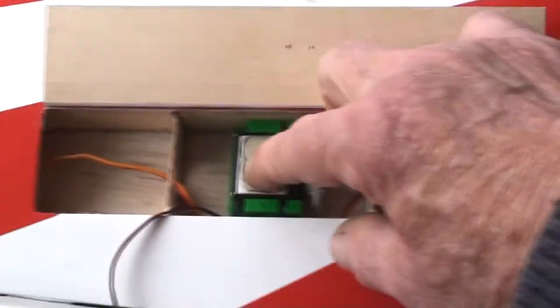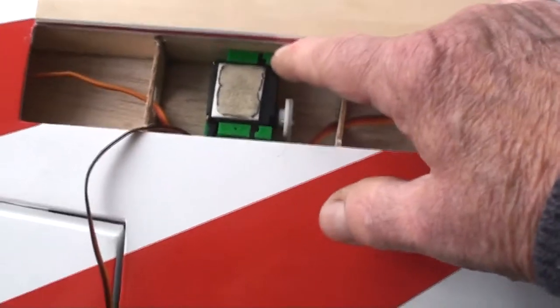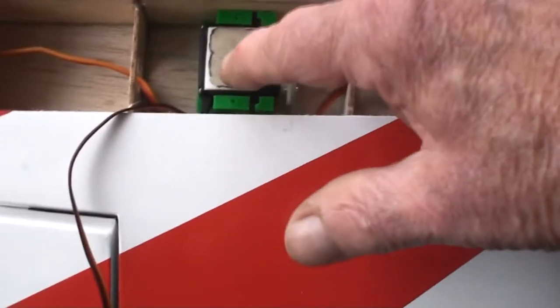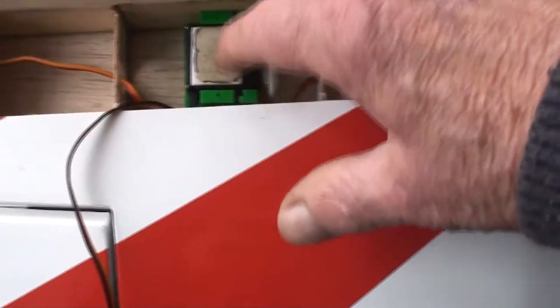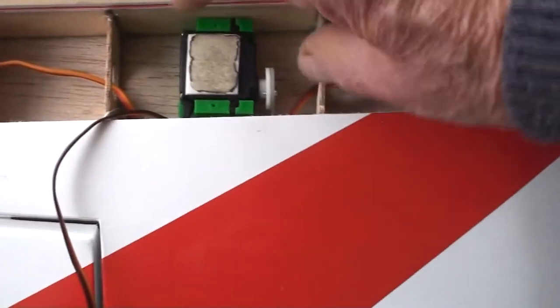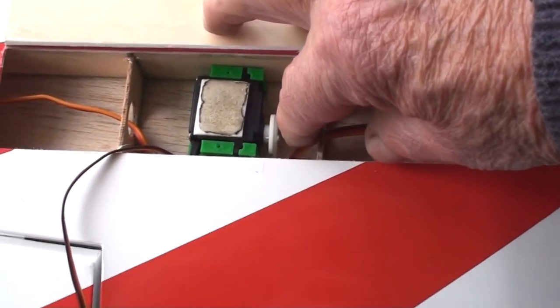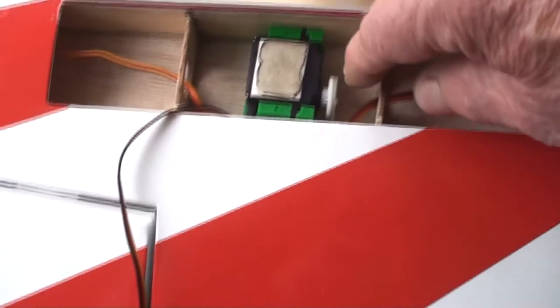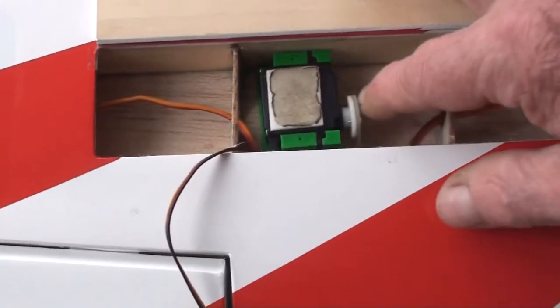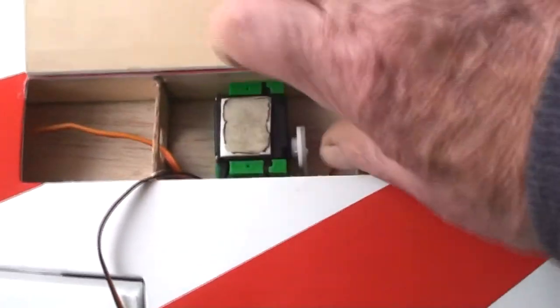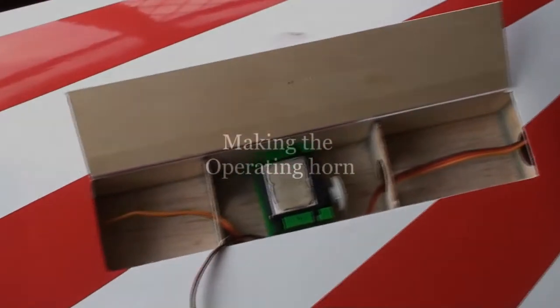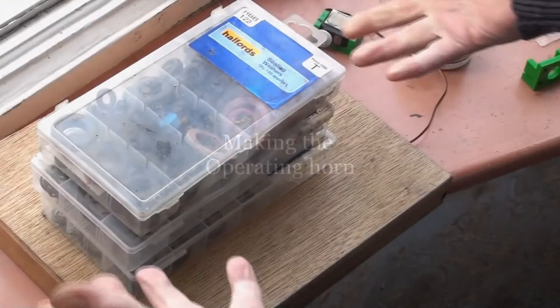So I can glue that both on the bulkhead there, a spar, and on the lower surface. And I can still pull that servo to change it or to tighten the screws in the output. So it can be anywhere in there.